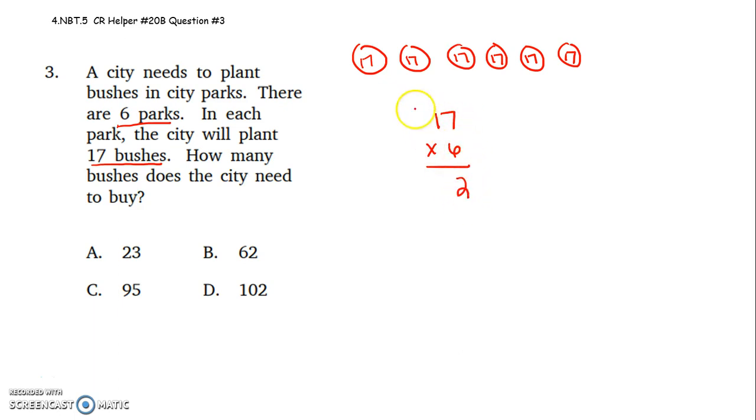Seven times six is 42. Put down a two, carry a four. Six times one is six, and four more is ten.